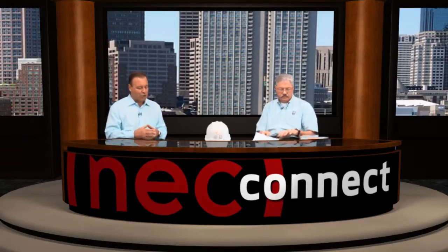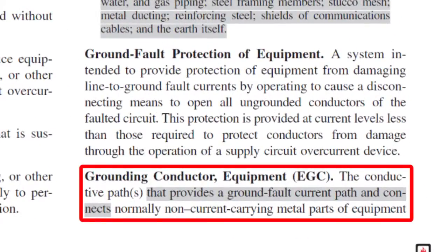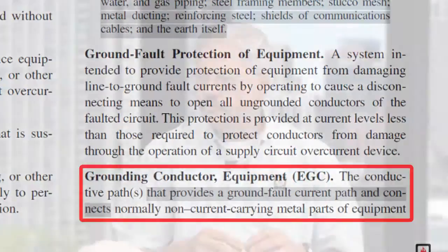More definitions about grounding and bonding. EGC — the term EGC stands for Equipment Grounding Conductor. That's a conductive path that's installed to connect normally non-current carrying parts of metal and equipment to the system grounded conductor or to the grounding electrode conductor or both. And it's important that the equipment grounding conductor also serves as a bonding conductor to interconnect non-current carrying metal parts of equipment.